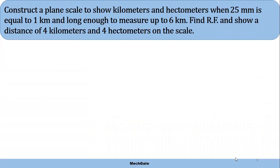Construct a plane scale to show kilometers and hectometers. We know the relationship: 1 kilometer is equivalent to 10 hectometers. Given that 25 millimeters equals 1 kilometer, this is our RF where the length of drawing is 25 mm and actual length is 1 km, and long enough to measure up to 6 kilometers. We need to find the RF and show a distance of 4 kilometers and 4 hectometers on the scale.